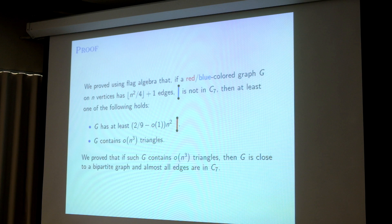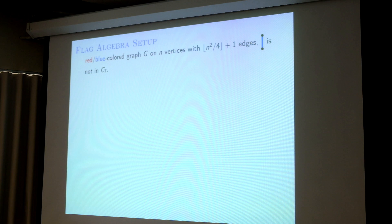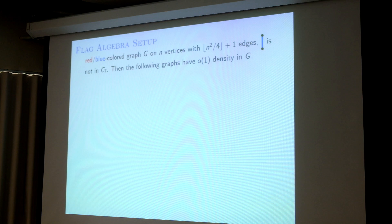So this is the idea of the proof: instead of just asking what you can say about the lower bound of a red edge, we ask something else which gives us one of these two cases. And what question we ask — I will show you now. We say: n²/4 + 1 edges, blue edge is not in C7. And we actually say something more about the graph G. The blue edge is not in C7, but we can show that the blue edge is actually not in even more structures.